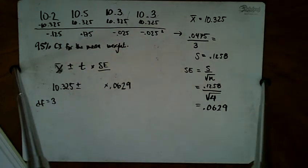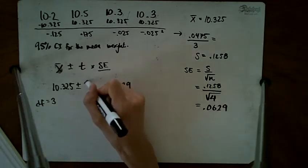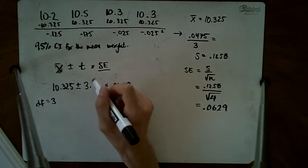3 degrees of freedom. The critical value I see for 95% confidence is 3.182.